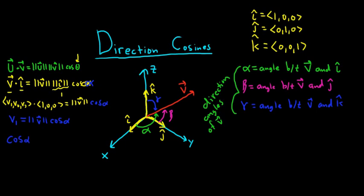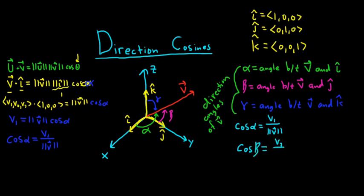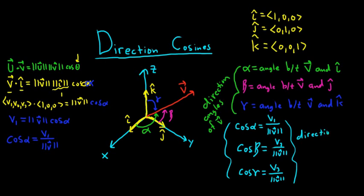So this means that the cosine of alpha equals v1 over the magnitude of v. You can guess the other ones are very similar. We have cosine of alpha equal to v1 over the magnitude of v. You play the same game using j hat and you get cosine of beta equal to v2 over the magnitude of v. Then using k hat you get cosine of gamma equal to v3 over the magnitude of v. These are called the direction cosines.